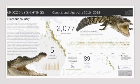Another example: this is Crocodile Sightings in Queensland, Australia, 2010 to 2015. If you remove all the text and all the pictures, how would it look? The same Lego structures. But look how beautifully it has been made. Now you want to see it, you want to see what's going on. There is a story. There is a narrative.